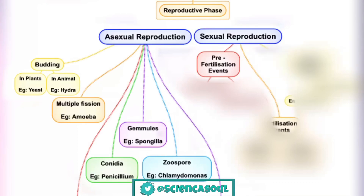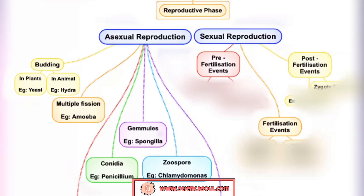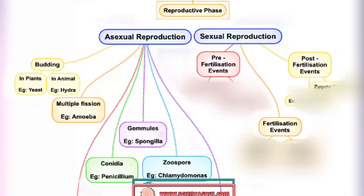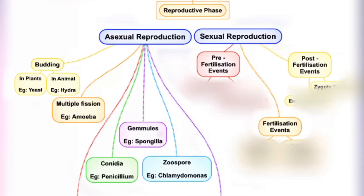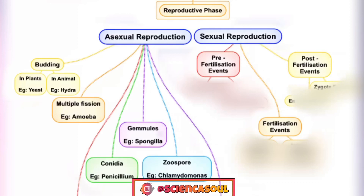Next is sexual reproduction. It consists of three events: pre-fertilization events, fertilization events, and post-fertilization events. Sexual reproduction involves the formation of male and female gametes either by the same individual or by different individuals of opposite sex. These gametes fuse to form a zygote, which develops to form a new organism.